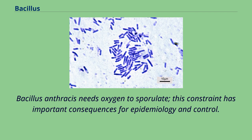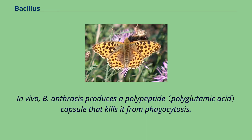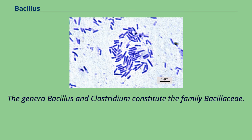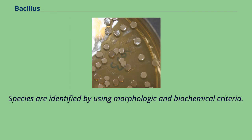Bacillus anthracis needs oxygen to sporulate, and this constraint has important consequences for epidemiology and control. In vivo, B. anthracis produces a polypeptide capsule that protects it from phagocytosis. The genera Bacillus and Clostridium constitute the family Bacillaceae. Species are identified by using morphologic and biochemical criteria.